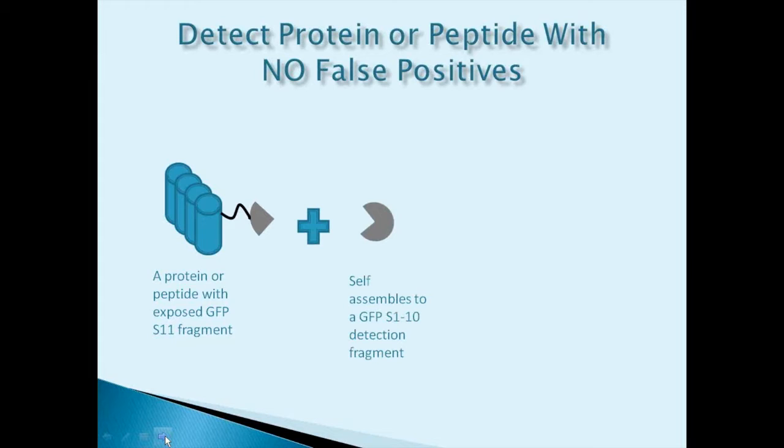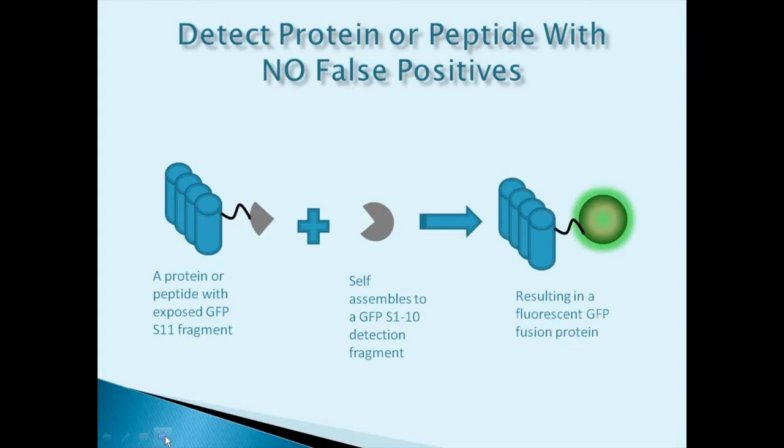The tag protein self-assembles with the heavier detection fragment, this is a larger 27-kDA fragment that binds only the small fragment in a very specific and irreversible manner, resulting in a fluorescent GFP fusion protein.